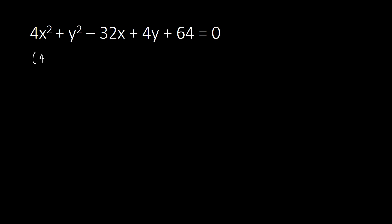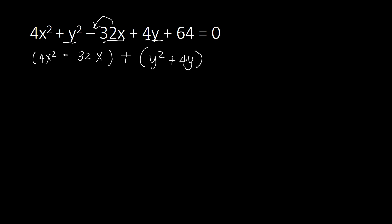So we have 4x squared, and we have 32x with the x variable — before that is a minus, so we have minus 32x. Then we group for y: we have y squared and then 4y, with a plus sign before it. And we move 64 to the other side, so that becomes negative 64.